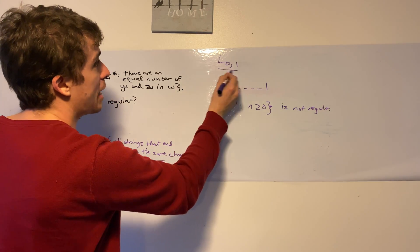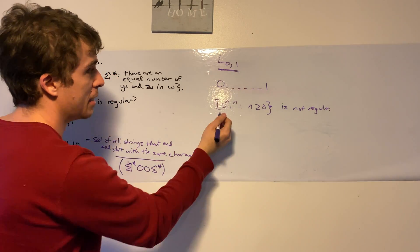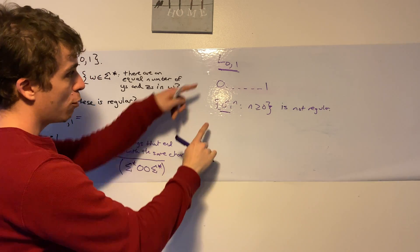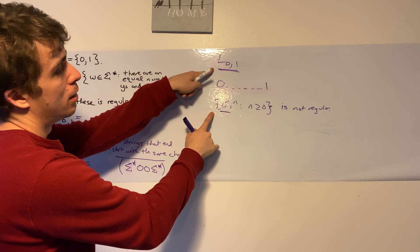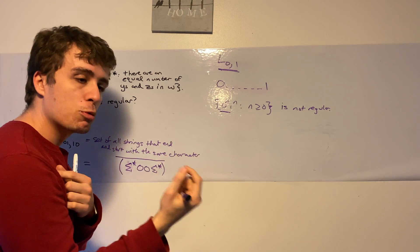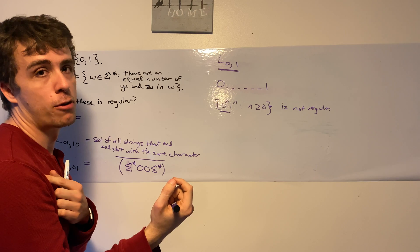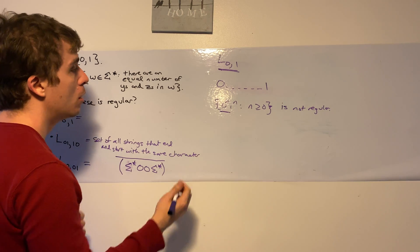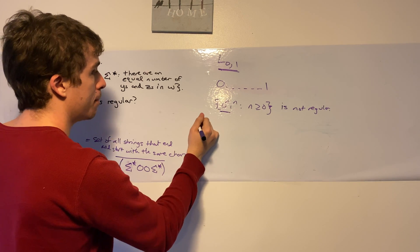So this language has more strings in it than this one. But how can we relate these two languages together? This one is basically just this language, except we enforce that the 0s come first before the 1s. How can we enforce that?